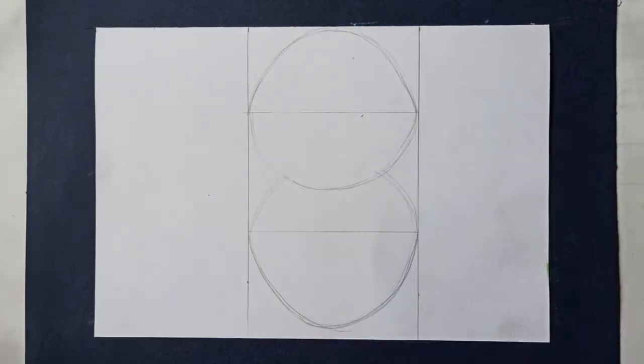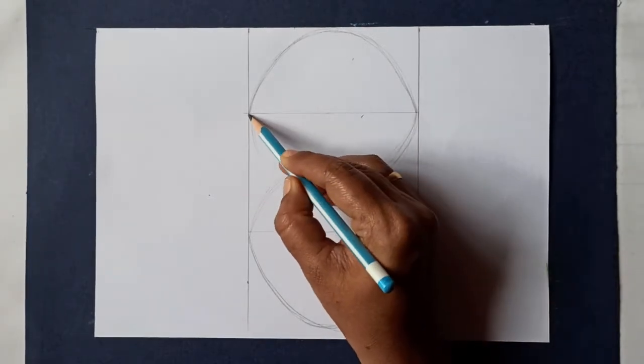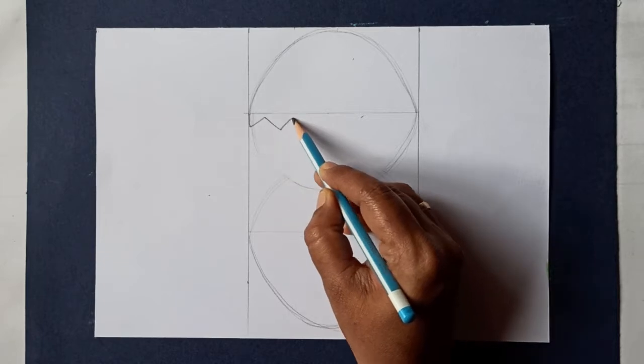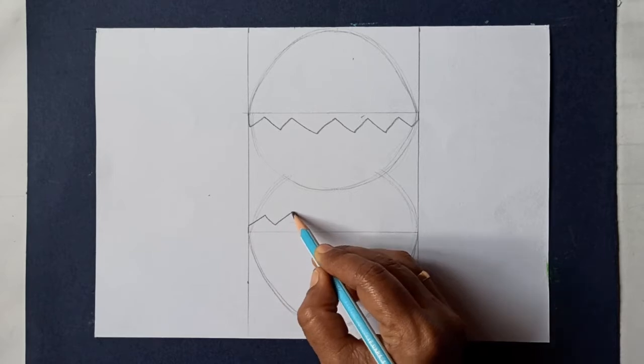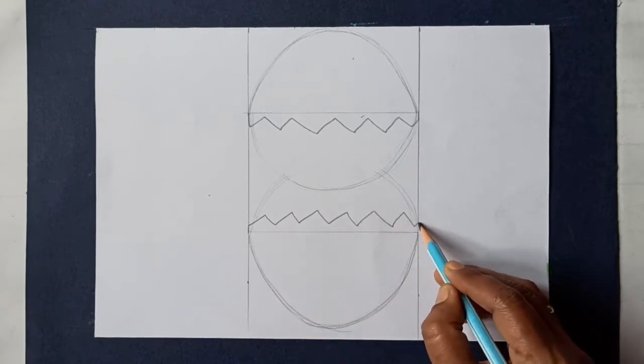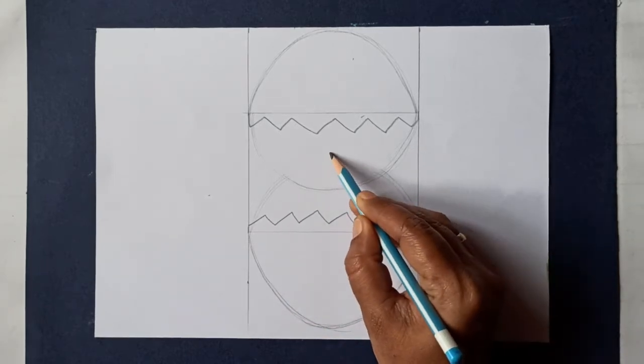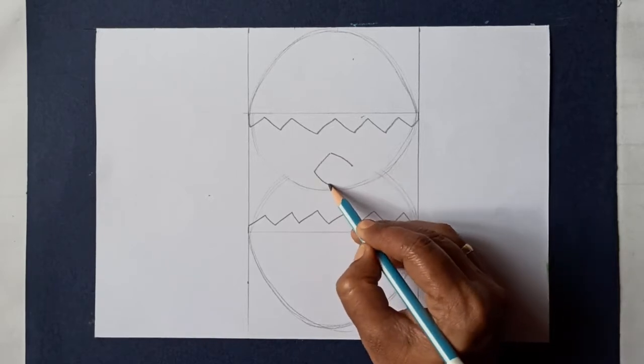Draw the zig-zag line up and zig-zag line down. Let's draw a beak as shown here.